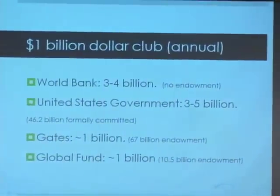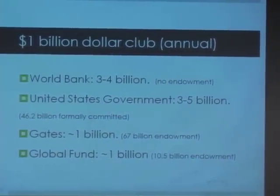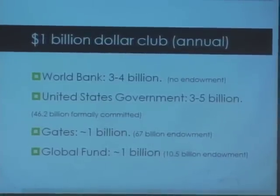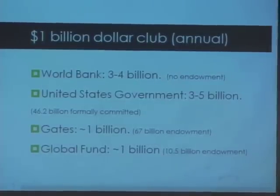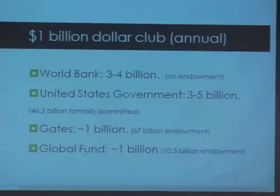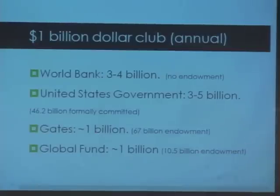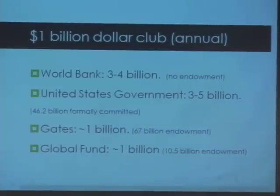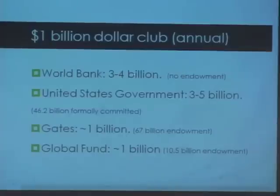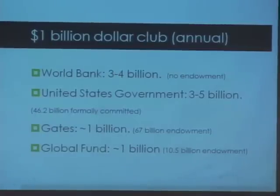A billion dollars sounds like a lot, but in terms of overall health spending it's pretty trivial: $14 billion in development assistance for health every year versus $4.3 trillion worldwide on health. The Global Fund gives just about a billion a year with a $10.5 billion endowment. The Gates Foundation gives out just over a billion dollars a year with a $67 billion endowment including Buffett's contribution. The US government has been giving $3 to $5 billion a year, and the World Bank gives $3 to $4 billion annually.